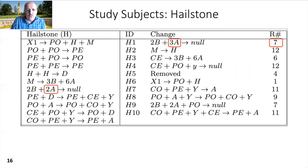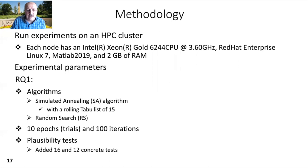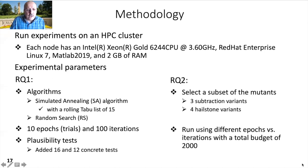We ran experiments on an HPC cluster. Each node has an Intel Xeon CPU with Red Hat Linux, MATLAB 2019, and two gigabytes of RAM. For RQ1, we use simulated annealing with a rolling tabu list of 15, and random search for 10 epochs and 100 iterations. We added 16 and 12 concrete tests for plausibility tests. For RQ2, we selected a subset of mutants and ran using different configurations with a total budget of 2000.